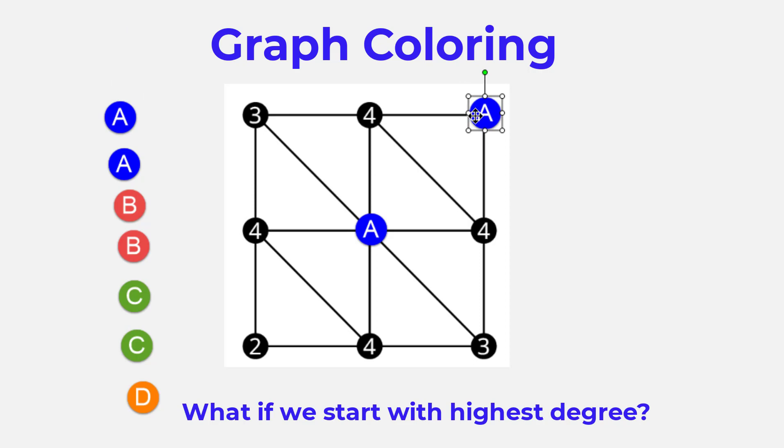There's the vertex in the upper right corner of degree two and in the lower left corner of degree two. We can't do any of the others because they all are adjacent to that middle vertex. So I'm going to go with the one in the lower left corner, and then after I do that one, I can also do the one in the upper right.